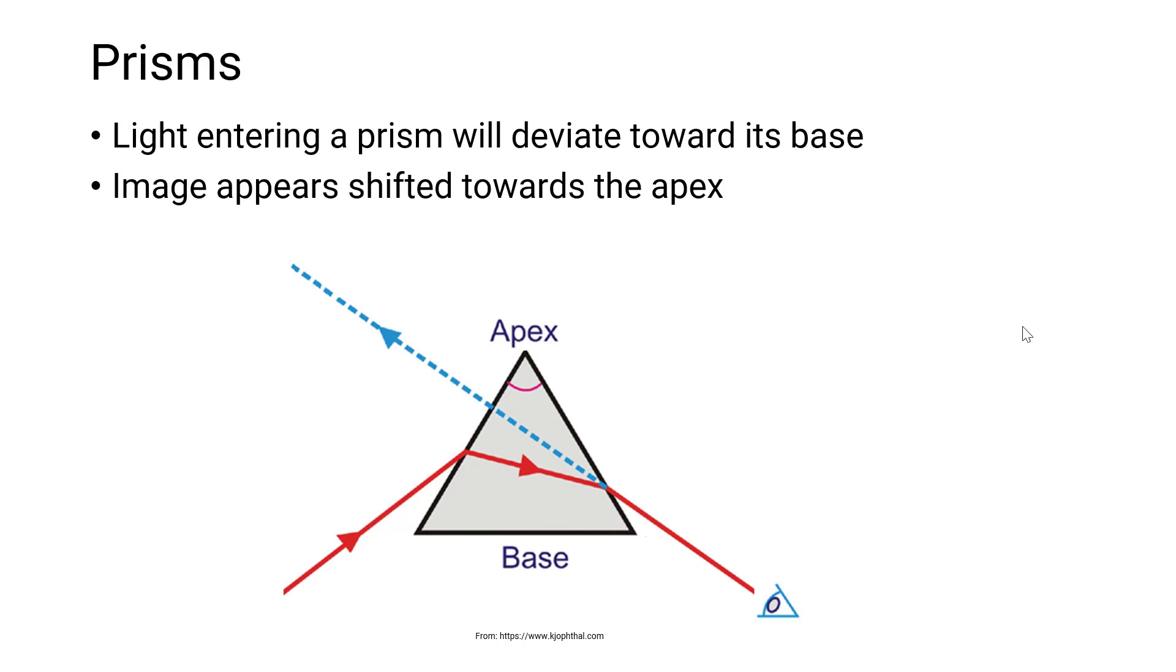Let's have a look at the image here of a prism. We have its base here and the apex here. Red depicts the light and we can see that as it passes through the prism, it bends or deviates towards the base. And the same occurs when it exits the prism. It bends towards the base.